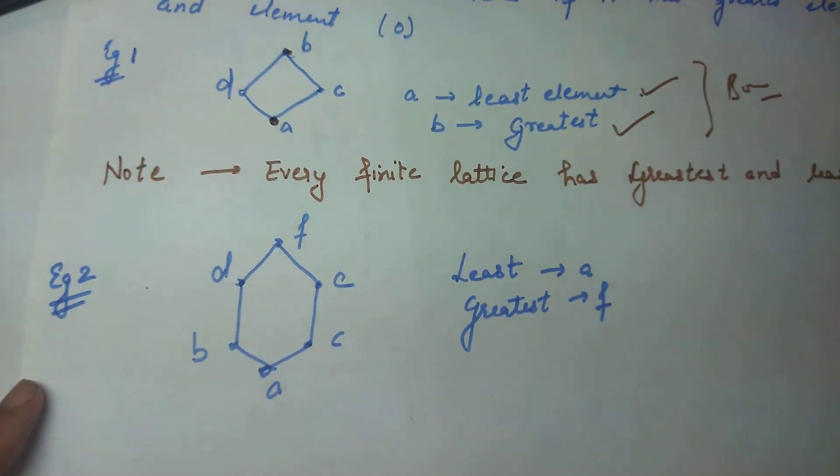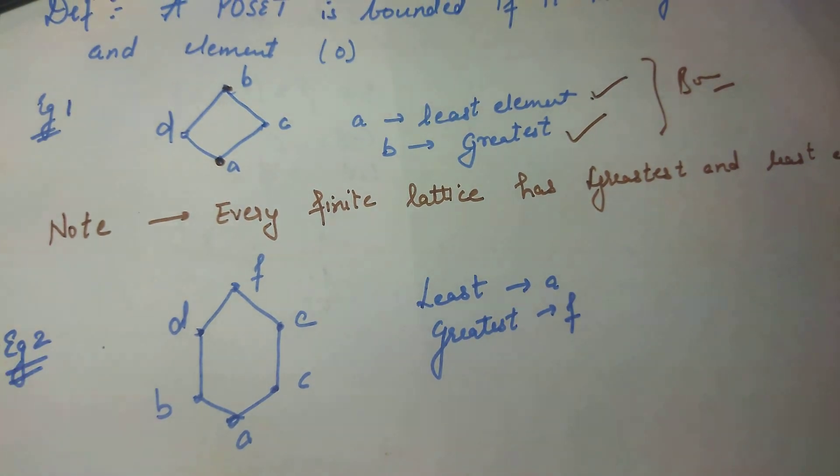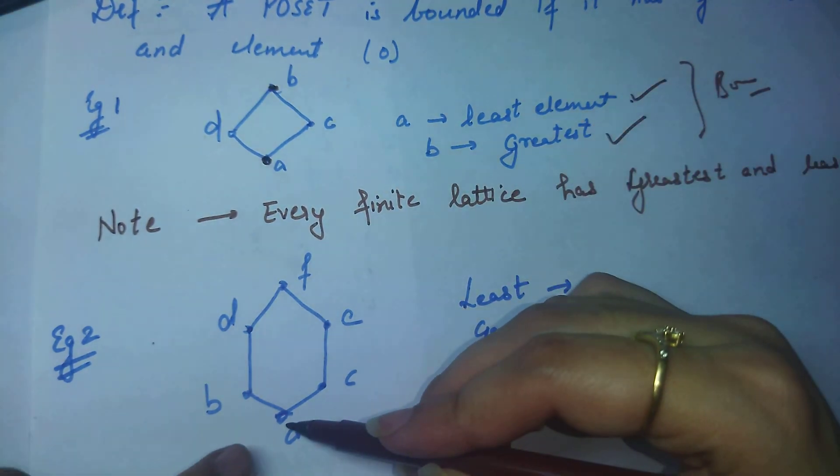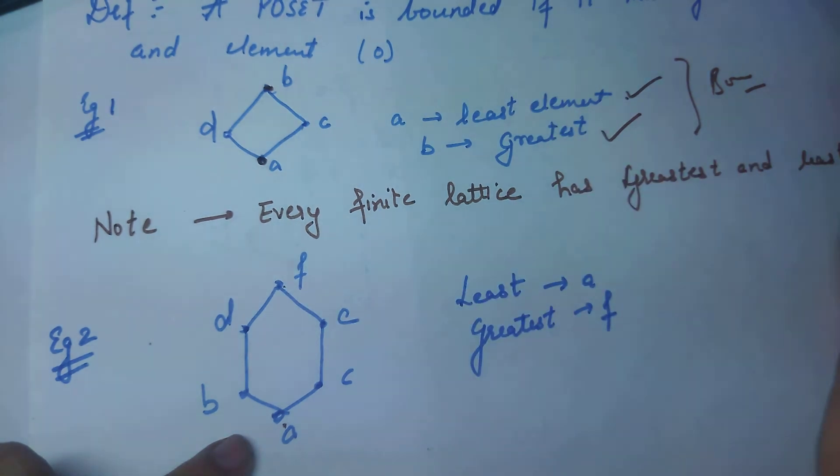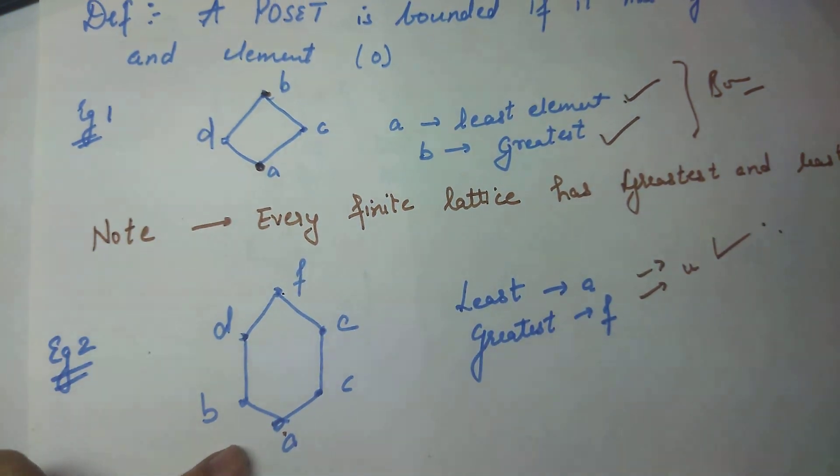Let's see the next example. Another note: every finite lattice has greatest and least element. Now let's see, the least element is A and the greatest element is F. This is a lower bound and upper bound. So yes, this is bounded lattice.